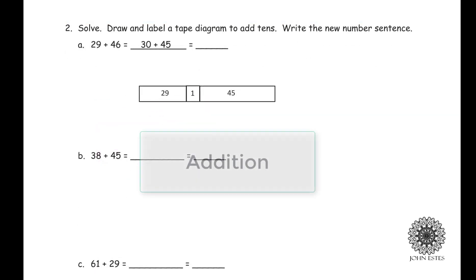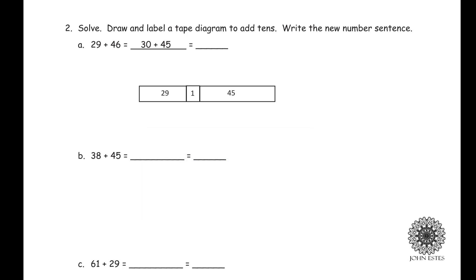Now let me show you how addition works. This time I'm going to draw and label a tape diagram to add the tens and then write a new number sentence. Here I have 29 and 46. The child draws a tape diagram and marks it off as 29 and 46. This rectangle represents the sum of 29 and 46 — its total length has length 29 and length 46, and whatever that total length is, that's the answer we're looking for.